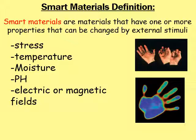What's really important on this slide is that first definition: smart materials are materials that have one or more properties that can be changed by external stimuli. That is something you need to try and remember as best you can.